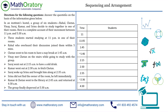This is the table I've developed. The first point tells us there were three students who started studying at 11pm in one of their rooms. We don't know which three students they are, so I just put three dashes to indicate there will be three people. Next, it says Rahul — who overheard the discussion — joined them within five minutes, so at around 11:05pm Rahul joins these three people.